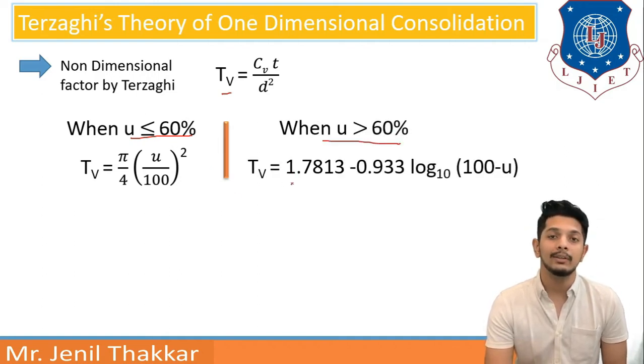And if U is greater than 60% we can write Tv is equal to 1.7813 minus 0.933 log 10 base 100 minus U. So this is how we can find out degree of consolidation as well as time factor.